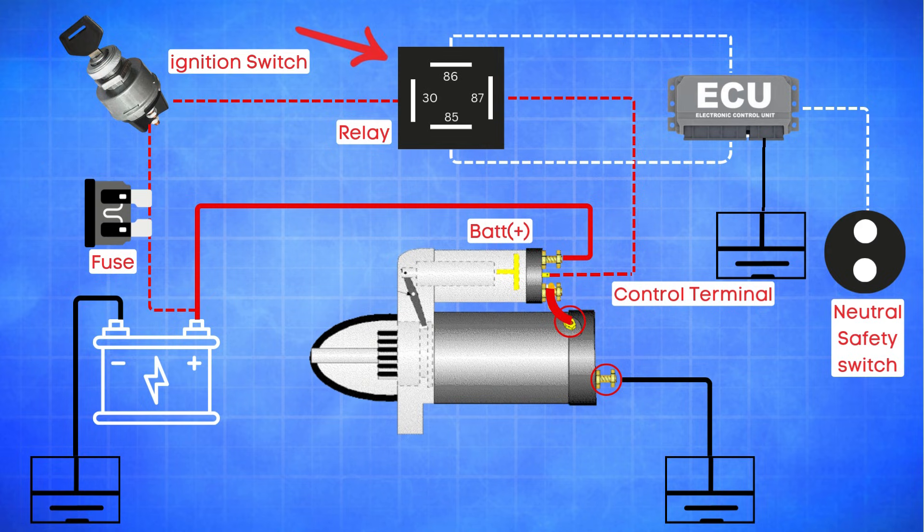All right, now let's talk about the starter relay, an essential bridge between the battery and the starter solenoid. Its primary job is to ensure that the high current needed to engage the starter solenoid doesn't flow directly through the ignition switch. This protects the switch and keeps the system safe. The starter relay has four terminals, each with a specific function.